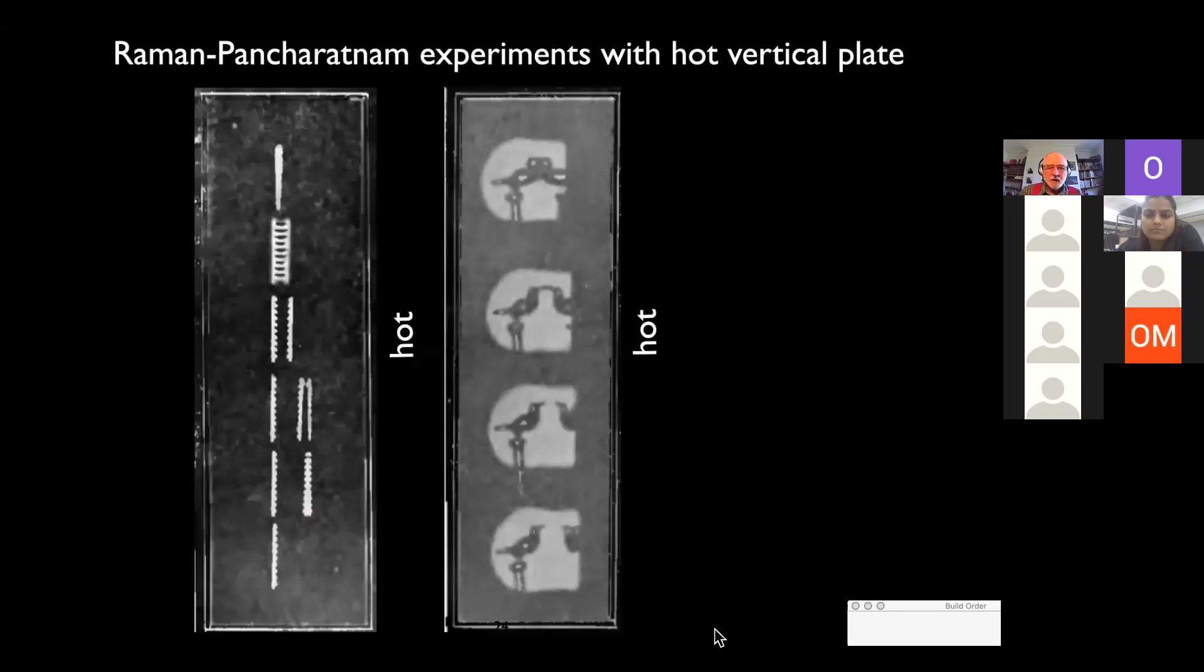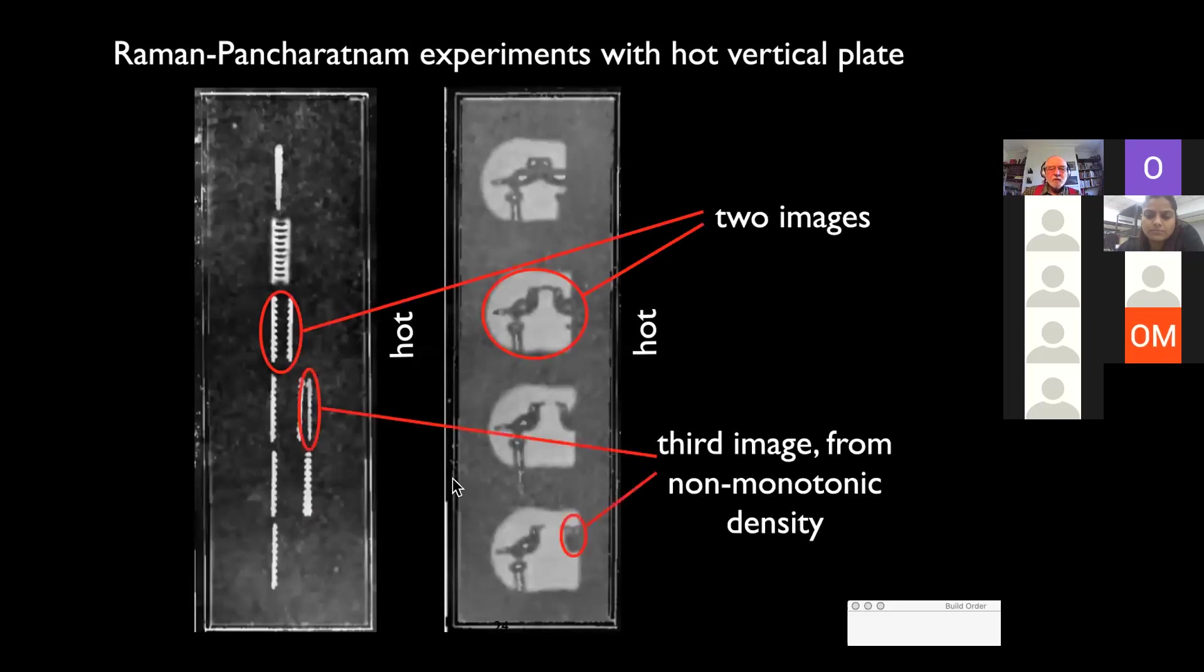Now, Raman and Pancharatnam gave some experiments with a hot vertical plate. And you can see two images here, but you sometimes see three, a third image. And this comes, or one of its explanations is, if the density is not monotonic, and it isn't always, the density of the air depends on temperature inversions and the like.